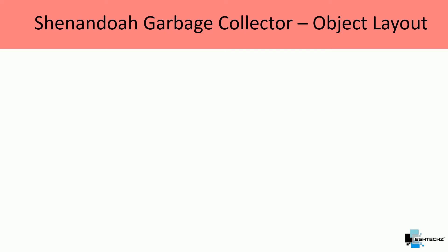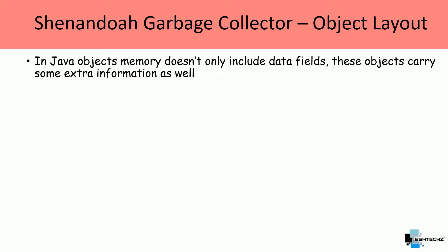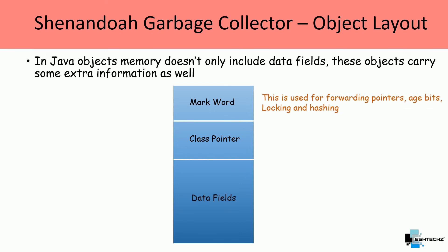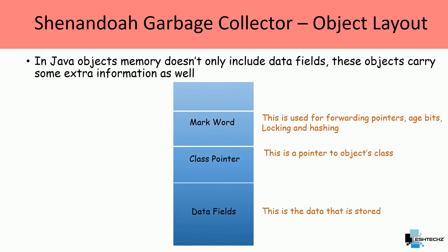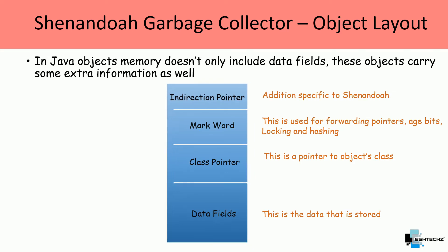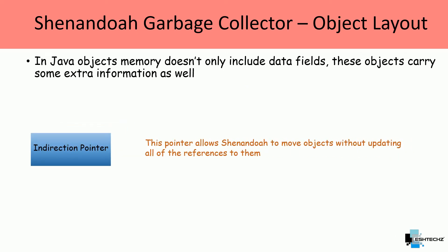Let's look at the object layout for Shenandoah. In Java, object memory includes not just data fields but extra information: mark word, class pointer, and data fields. Mark word is used for forwarding pointers, age bits, locking, and hashing. Class pointer points to the object's class. Shenandoah adds a new field called the indirection pointer, also known as the Brooks pointer, which allows Shenandoah to move objects without updating all references to them.